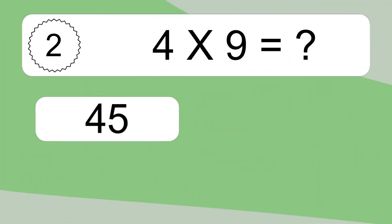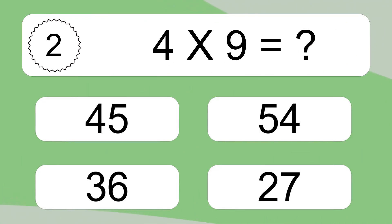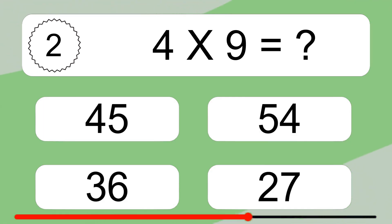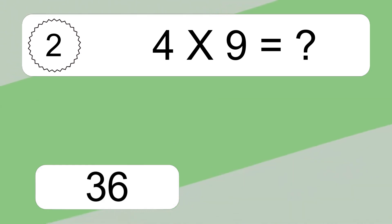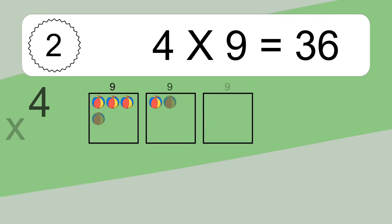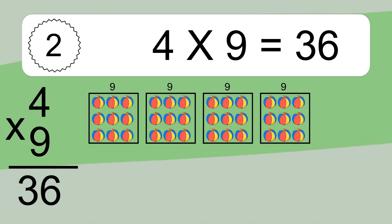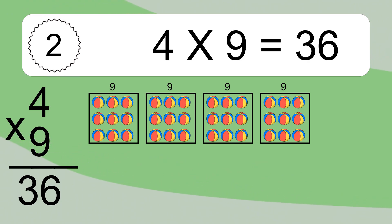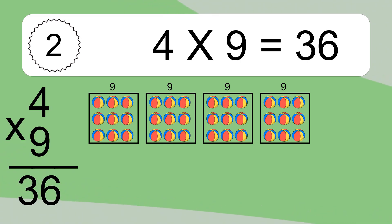4 times 9 equals what? 4 times 9 equals 36. We have 4 boxes, and each box has 9 colorful balls inside. If you count all the balls in all the boxes together, you will have 4 times 9 balls. This equals 36 balls.